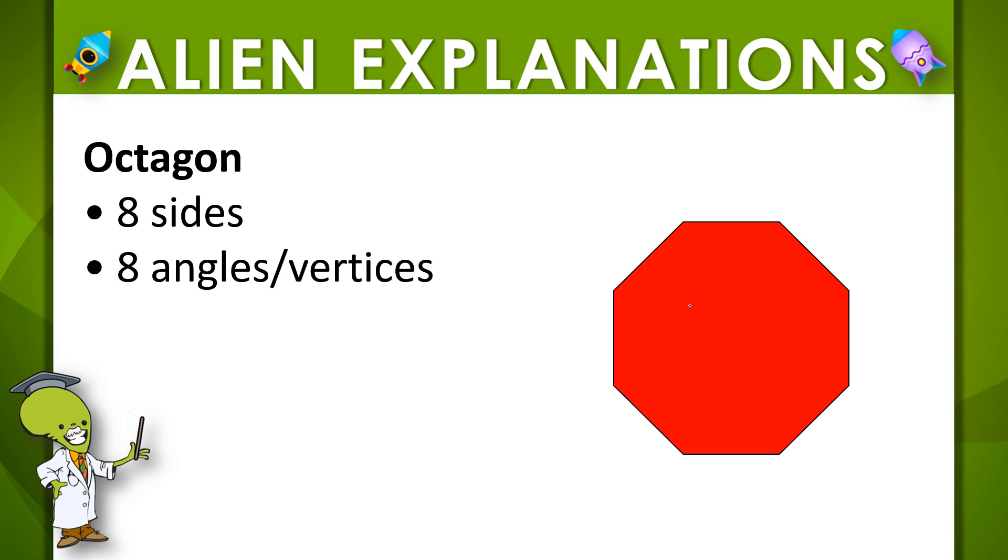And lastly, the other most commonly used polygon that we see is the octagon, and it has one, two, three, four, five, six, seven, eight sides, and one, two, three, four, five, six, seven, eight angles or vertices.